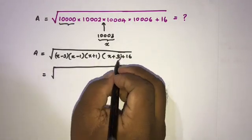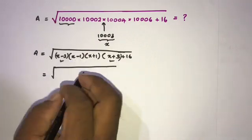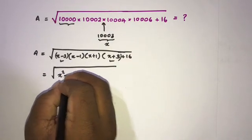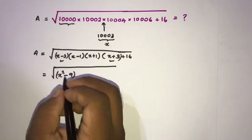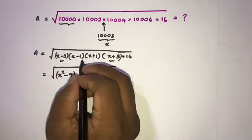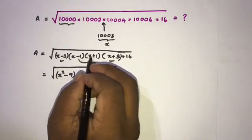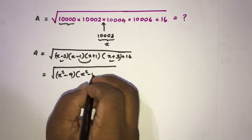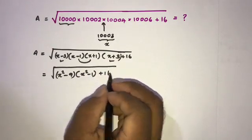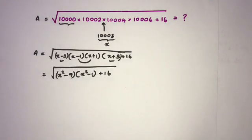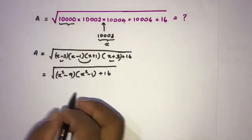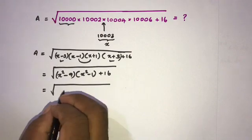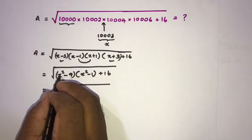We group and simplify: (x minus 3)(x plus 3) gives x squared minus 9, and (x minus 1)(x plus 1) gives x squared minus 1. So we have the square root of (x² − 9)(x² − 1) plus 16.